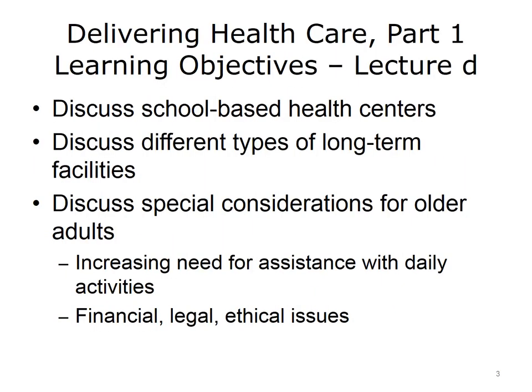This lecture discusses a brief overview of school-based health centers and different types of long-term care facilities, including home health care, group living, assisted living, retirement communities, nursing homes, hospice or end-of-life care, long-term hospitals, psychiatric hospitals, specialty hospitals, and community mental health centers. Special considerations in the care of older adults are also highlighted, such as the need for assistance with daily living and financial, legal, and ethical issues.